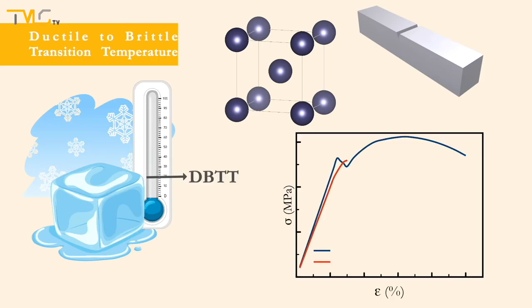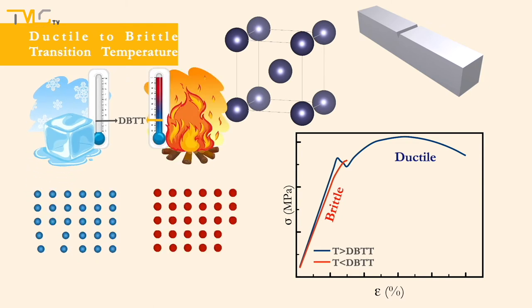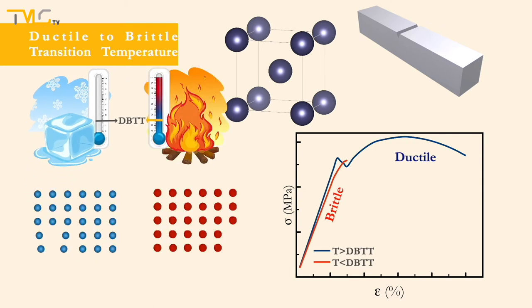Some materials show both ductile and brittle properties depending on the temperature. You may recall this phenomenon from video number 2.2, which is the ductile-to-brittle transition behavior. Ductile-to-brittle transition, in a nutshell, is a ductile material starting to show brittle characteristics when cooled below a material-specific temperature called the ductile-to-brittle transition temperature.